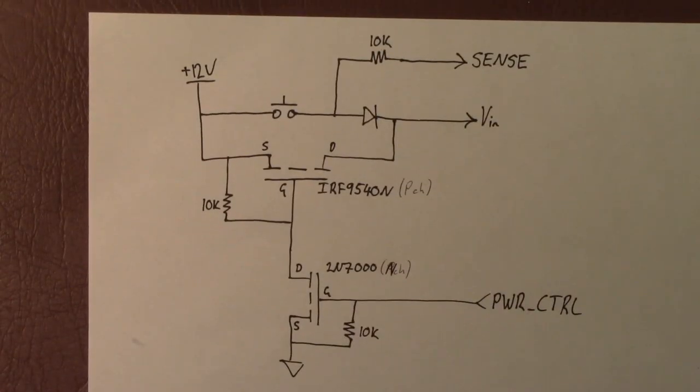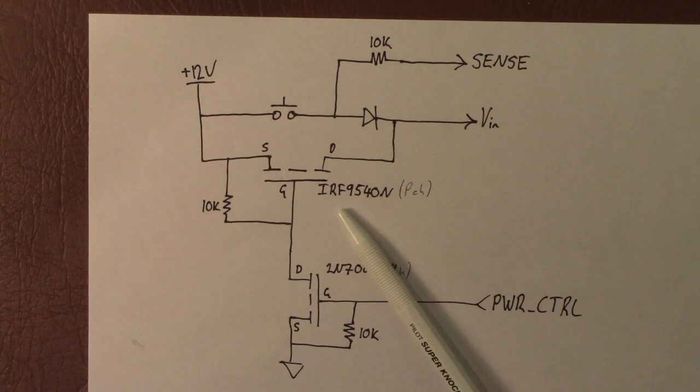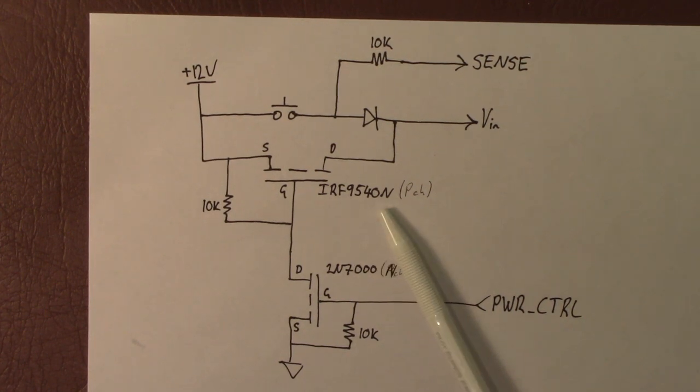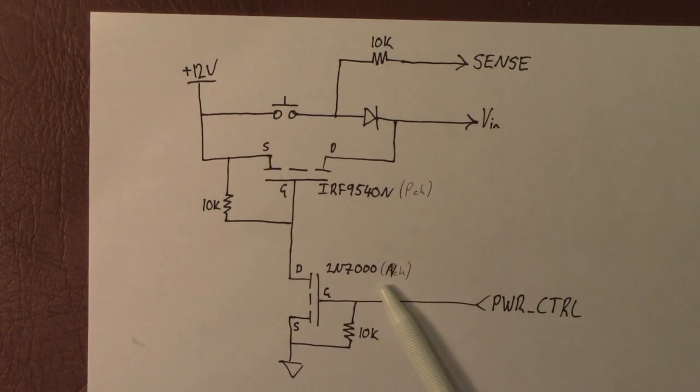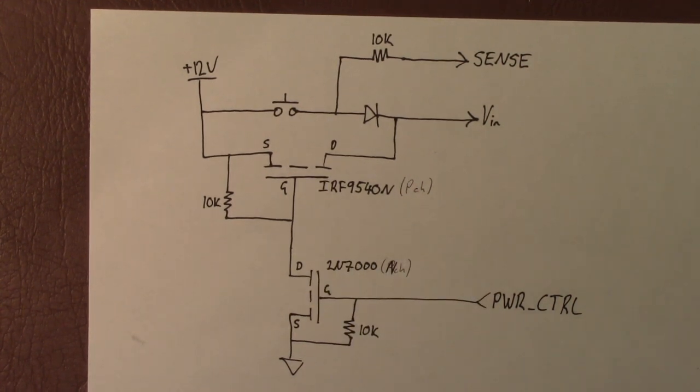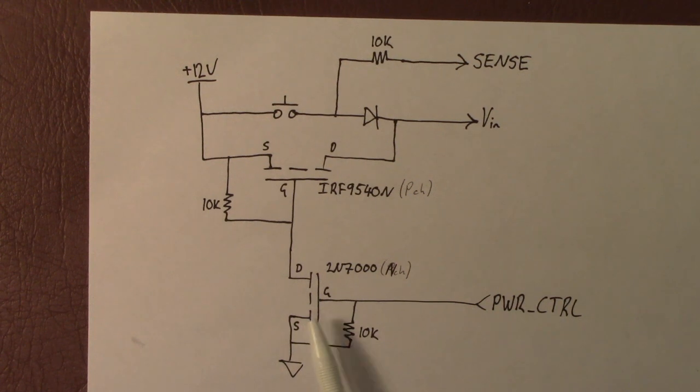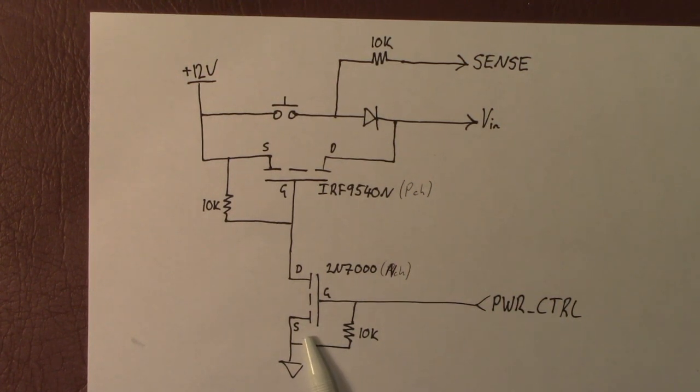So here it is. The circuit is made up of a power P-channel MOSFET and a much smaller signal N-channel MOSFET. Both of these are logic level. It's really only necessary for the bottom transistor to be a logic level unit. That's just being driven straight from a microcontroller output. In this case we're calling it power control.